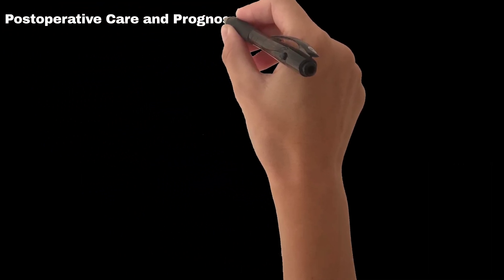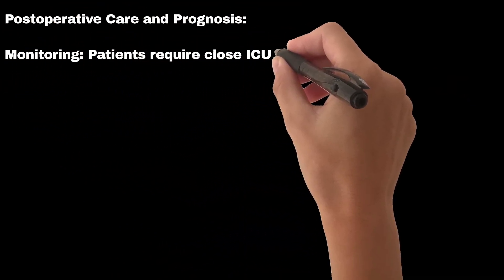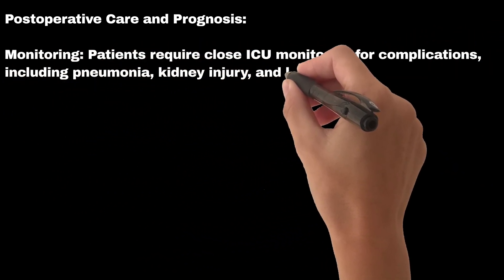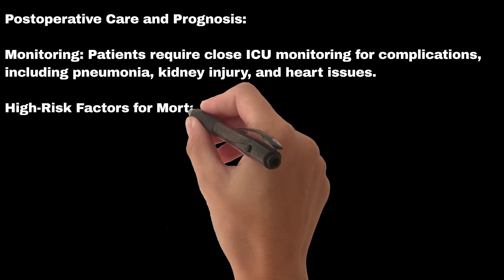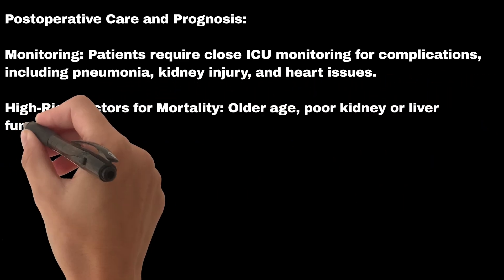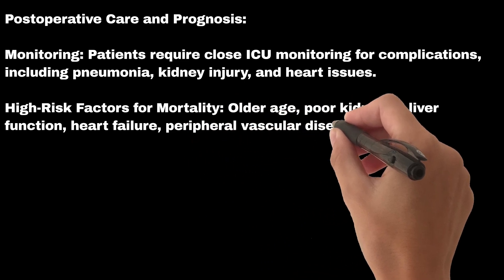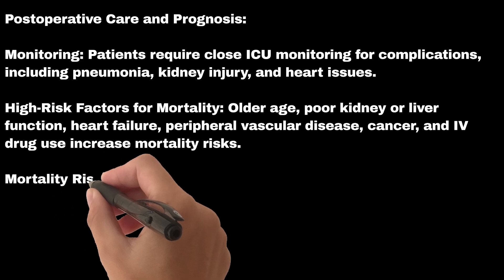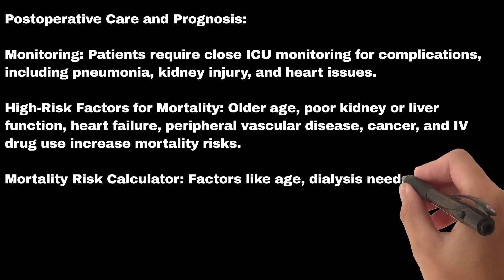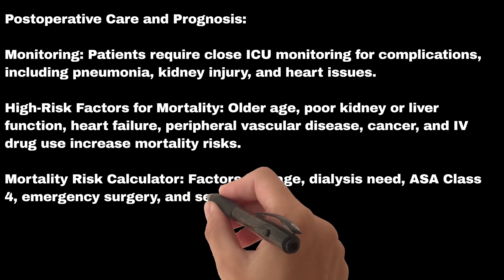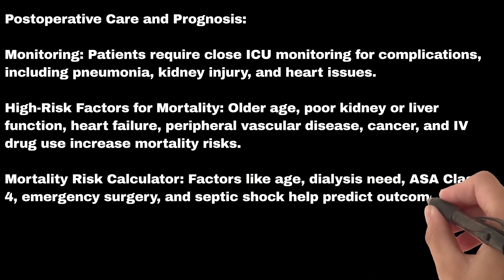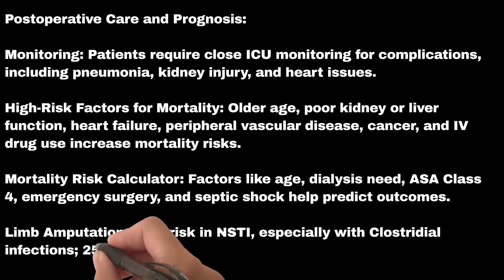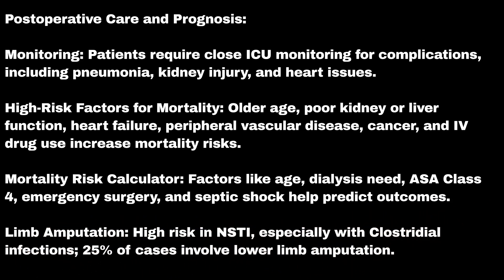Postoperative care and prognosis: patients require close ICU monitoring for complications including pneumonia, kidney injury, and heart issues. High risk factors for mortality include older age, poor kidney or liver function, heart failure, peripheral vascular disease, cancer, and IV drug use. A mortality risk calculator uses factors like age, dialysis need, ASA class 4, emergency surgery, and septic shock to predict outcomes. Limb amputation is high risk in NSTI, especially with clostridial infections — 25% of cases involve lower limb amputation.